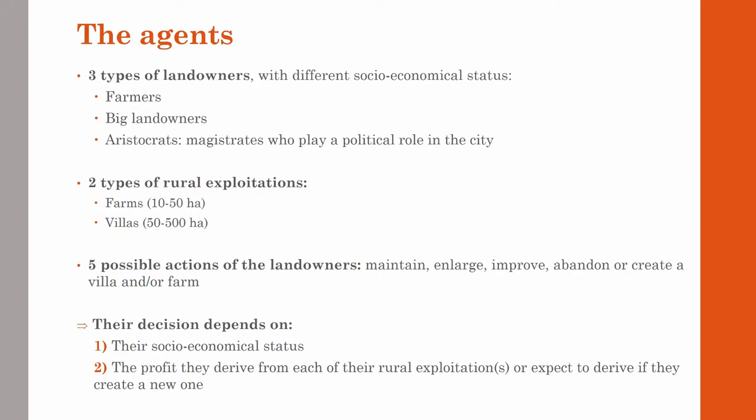The three types are farmers, big landowners, and aristocrats — meaning magistrates who play a political role in the city. Farmers can only own farms, whereas big landowners and aristocrats can own farms and villas. The size intervals allowed for each type of exploitation were chosen according to historical and archaeological data. Landowners can choose between five actions regarding each of their exploitations: maintain it without change, enlarge or improve it, abandon it, or create a new one. Their decision depends on their socio-economic status and the profits they derive from each exploitation.